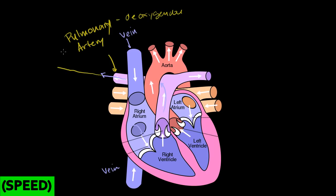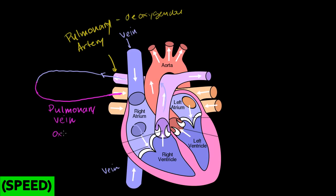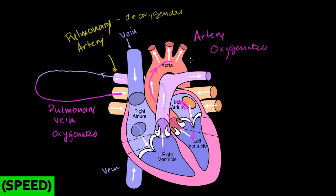The blood goes to the lungs, rubs up against the alveoli, gets oxygenated, and comes right back as the pulmonary vein — oxygenated — flowing into the left atrium and then the left ventricle. The left ventricle pumps it into the aorta — an artery, not pulmonary, going to the rest of the body — and it is oxygenated. To summarize: non-pulmonary arteries carry oxygenated blood; the pulmonary artery carries deoxygenated blood away from the heart to pick up oxygen. The pulmonary vein brings oxygenated blood from the lungs back to the heart, while all other veins carry deoxygenated blood back to enter the pulmonary loop.